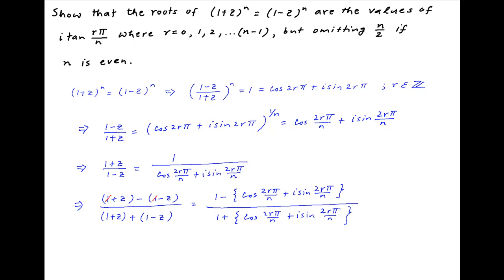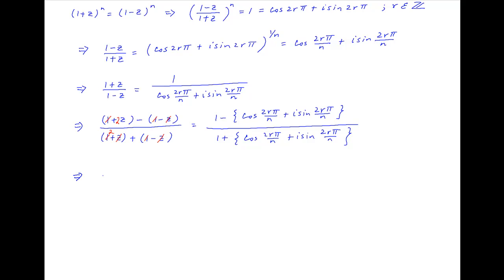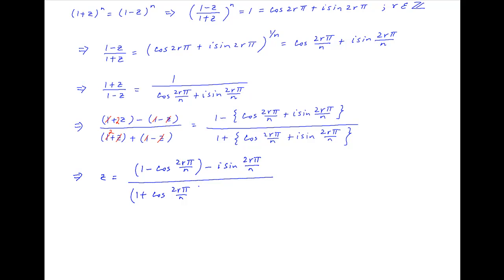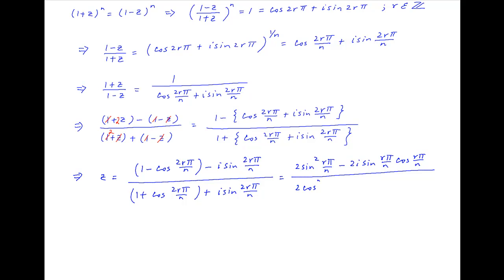On the left hand side the numerator is equal to 2z and the denominator is equal to 2. The 2 cancels across the numerator and denominator on the left hand side, and therefore z is equal to (1 - cos(2rπ/n) - i·sin(2rπ/n)) / (1 + cos(2rπ/n)).